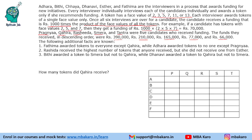Let us read the statements and put tick/cross entries. (1) Fatima awarded tokens to everyone except Kweera. (2) Adhara awarded tokens to no one except Prajna. (3) Rashida received the highest number of tokens but did not receive one from Esther. Bithi awarded a token to Smera but not to Kweera. Dhanvi awarded a token to Quahira but not to Smera.